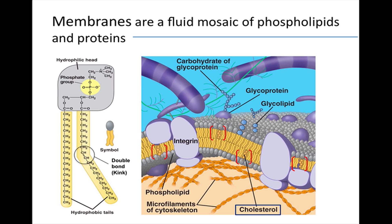Some proteins give the membrane a strong framework. These proteins, called integrins, span the membrane and attach to the cytoskeleton on the inside and the extracellular matrix on the outside. Glycoproteins are involved in cell-to-cell recognition, a second function of plasma membrane proteins.